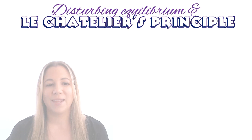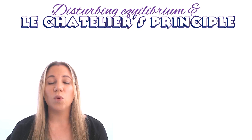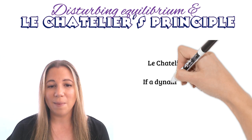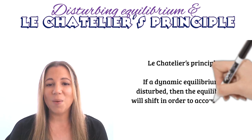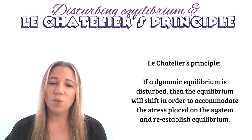Once a chemical reaction reaches equilibrium, what happens when it's disturbed? Just like in biology, how a system will work to reach homeostasis, in chemistry a chemical system will work to restore equilibrium again. Le Chatelier's principle states that if a dynamic equilibrium is disturbed, then the equilibrium will shift in order to accommodate the stress placed on the system and re-establish equilibrium. This means the equilibrium shifts towards the direction that will minimise or counteract the effect of that disturbance.